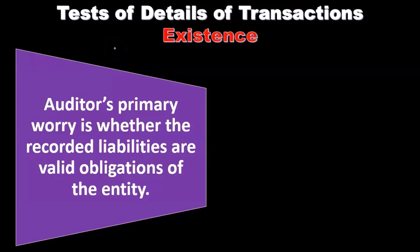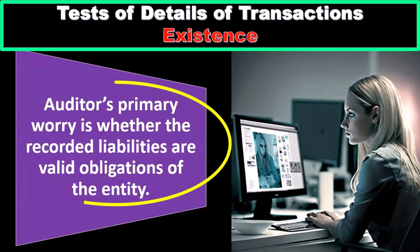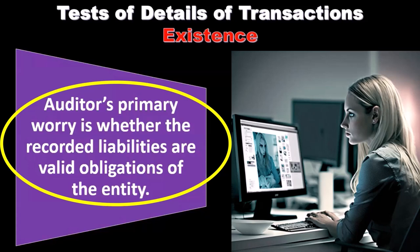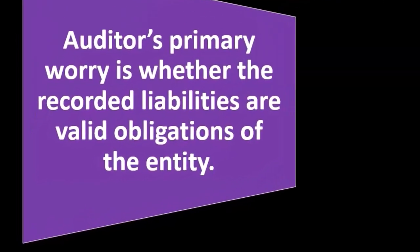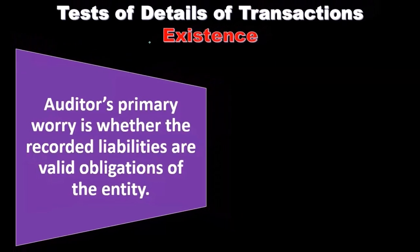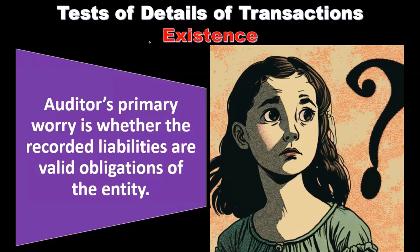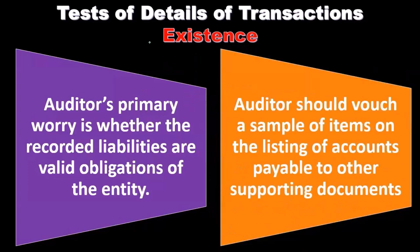The next assertion related to test of details of transactions is existence. With existence, the auditor's primary concern is whether the recorded liabilities are valid obligations of the entity. You would think that companies wouldn't intentionally overstate liabilities, as that would make them look worse — it might be an error, or could occur for tax reasons, but typically if there were intentional misstatement, they would try to look better, not worse.